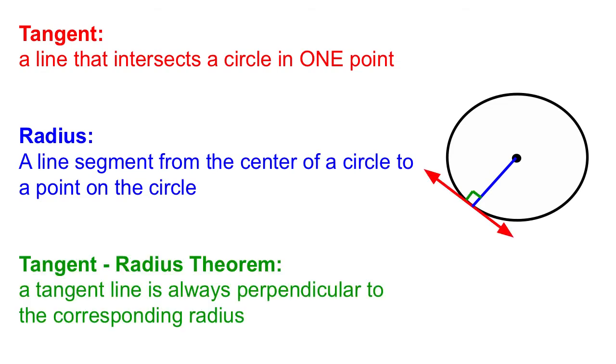The tangent radius theorem says that if you have a tangent line and a radius that intersect each other in one point, the tangent and the radius will be perpendicular to each other, which means they're going to form a 90-degree angle.